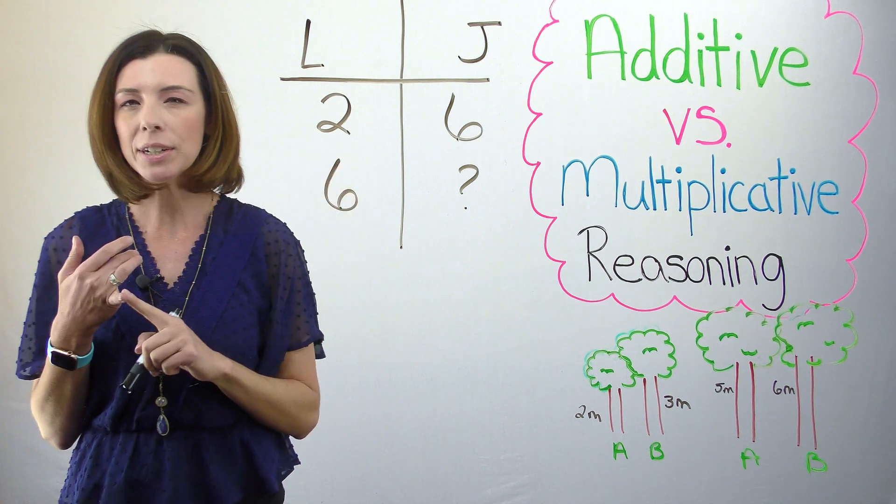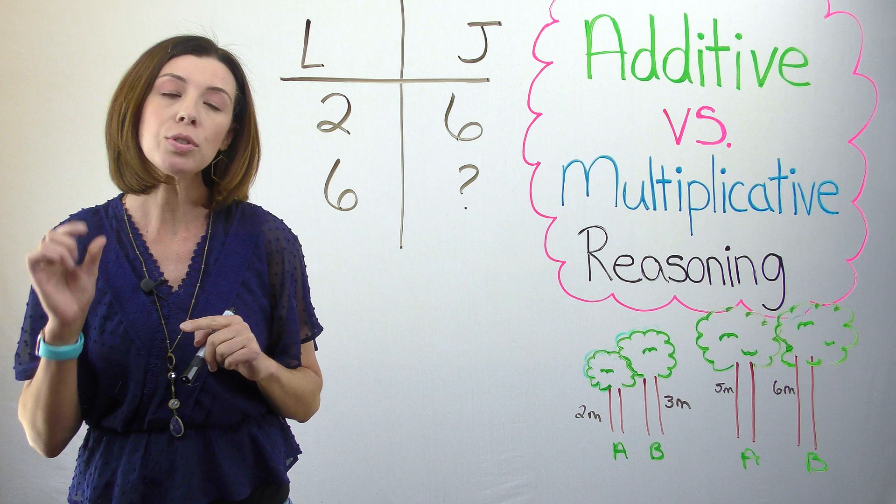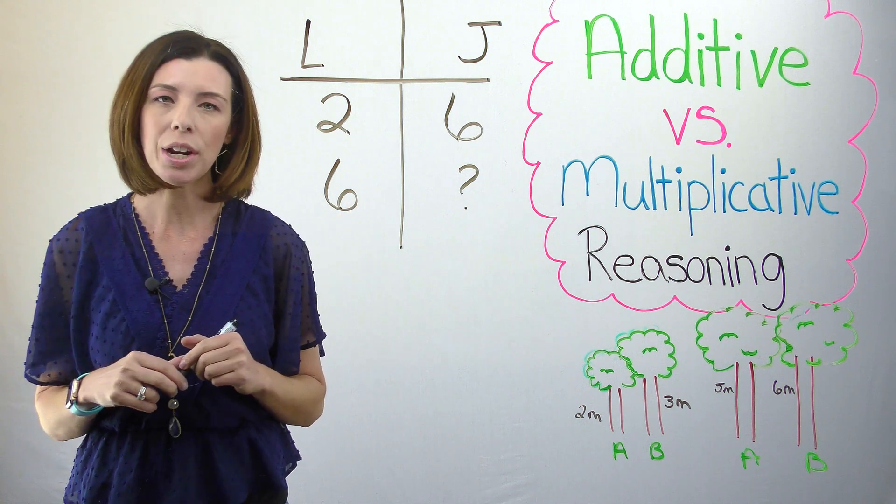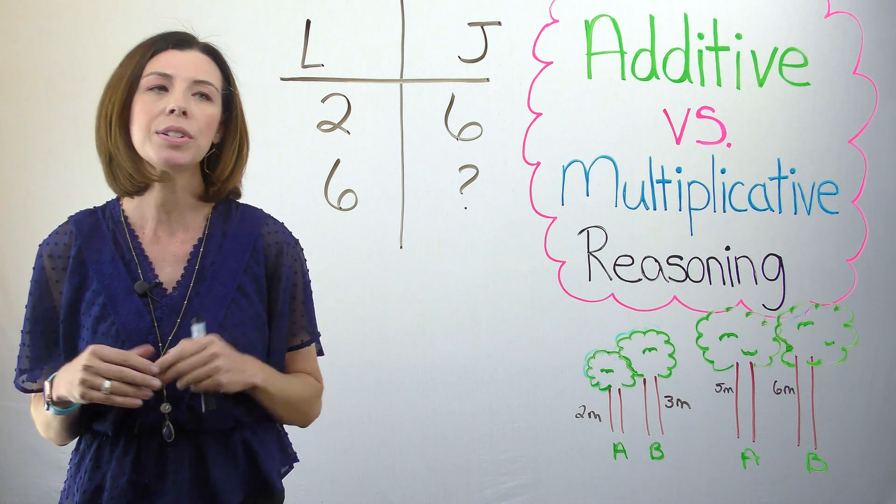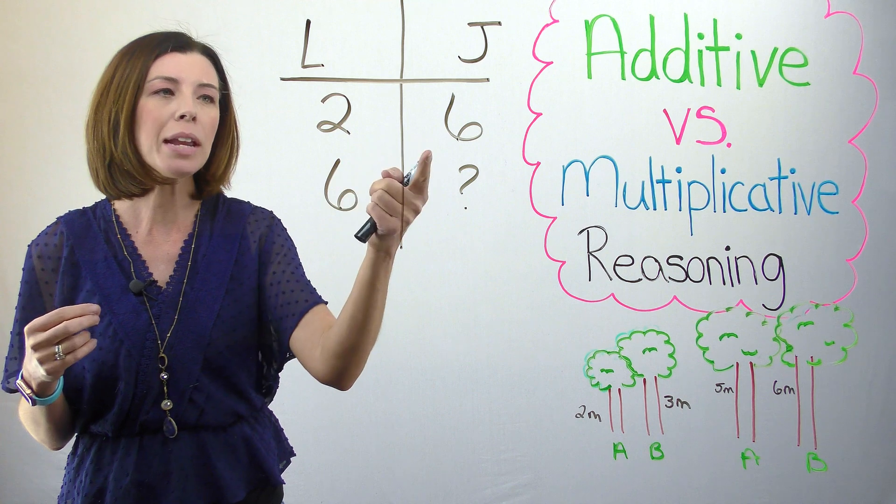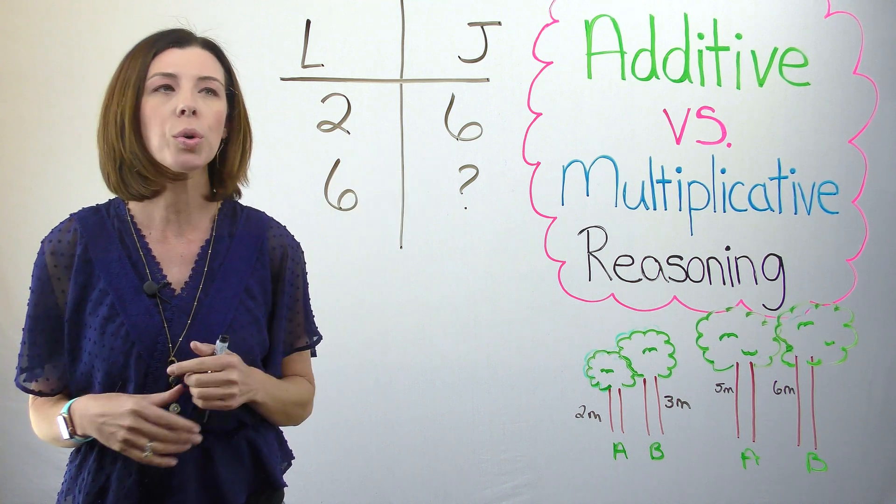Remember, we have additive reasoning that looks at the absolute change between the two quantities, and multiplicative reasoning that looks at the relative change. One uses subtraction, one uses division. If I divide 6 divided by 2, I can see that James is 3 times as old as Lisa.